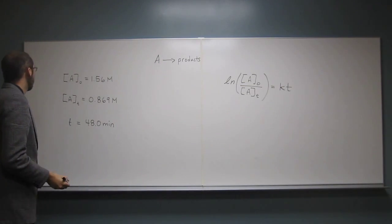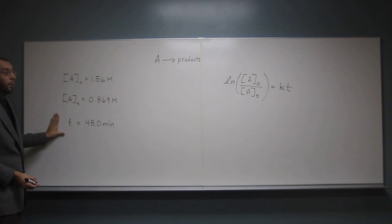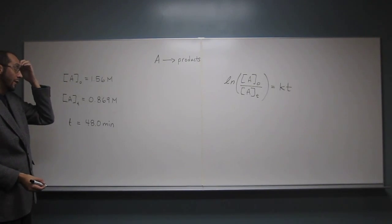We have values for A naught that's given to us, A at time T, and T. What we're looking for is the rate constant.